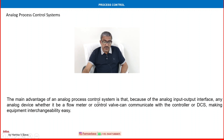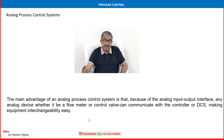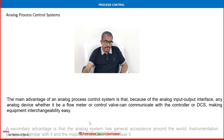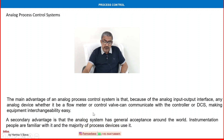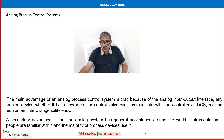The main advantage of an analog process control system is that because of the analog input-output interface, any analog device — whether a flow meter or a control valve — can communicate with the controller or DCS, making equipment interchangeability easy. A secondary advantage is that analog systems have general acceptance around the world; instrumentation people are familiar with them, and the majority of process devices use them.